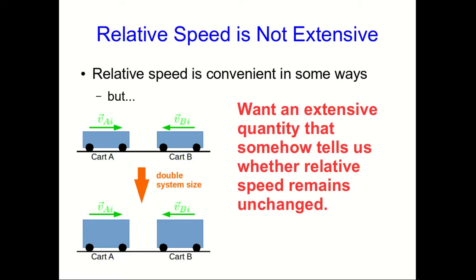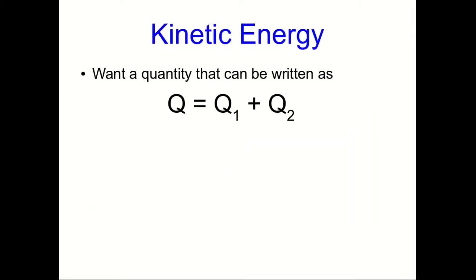So we'd like an extensive quantity that somehow tells us whether relative speed remains unchanged. To get an extensive quantity, we want something that we can write as: if the whole system has the quantity Q, and the system consists of two parts, then those parts are going to be Q₁ and Q₂, and you just add them to get the total. That's how extensive quantities work.